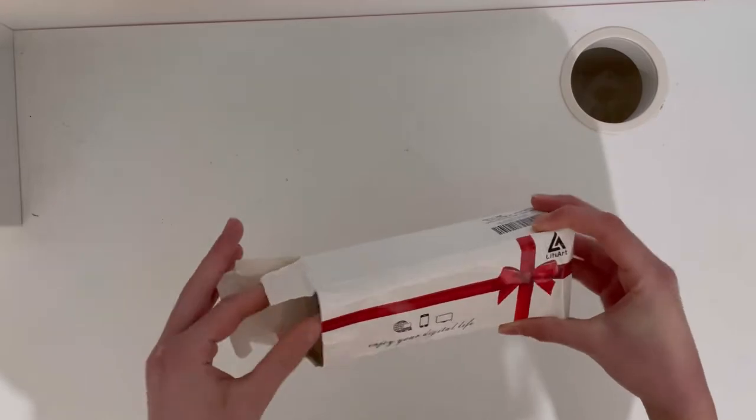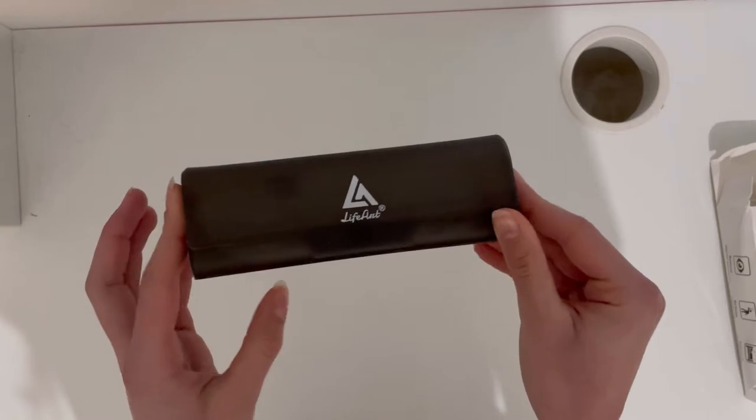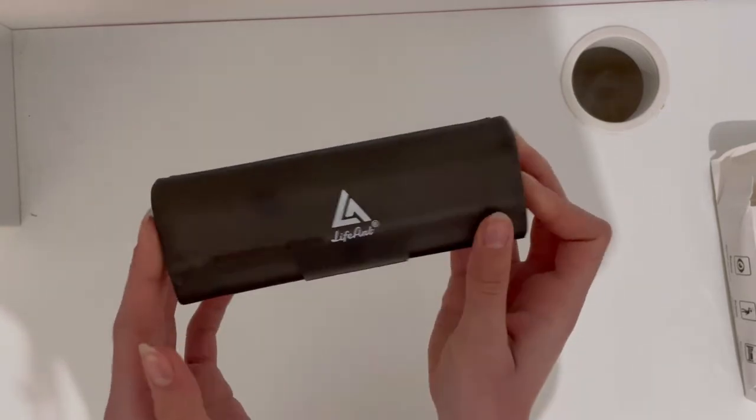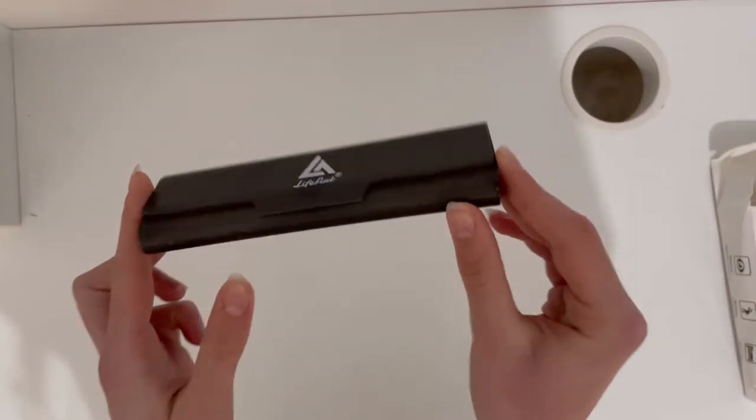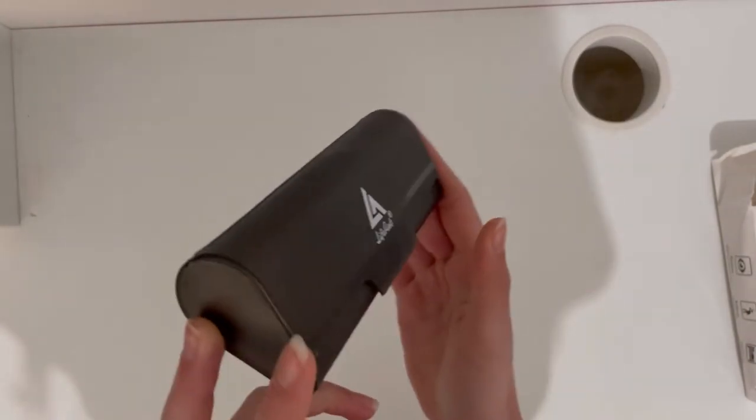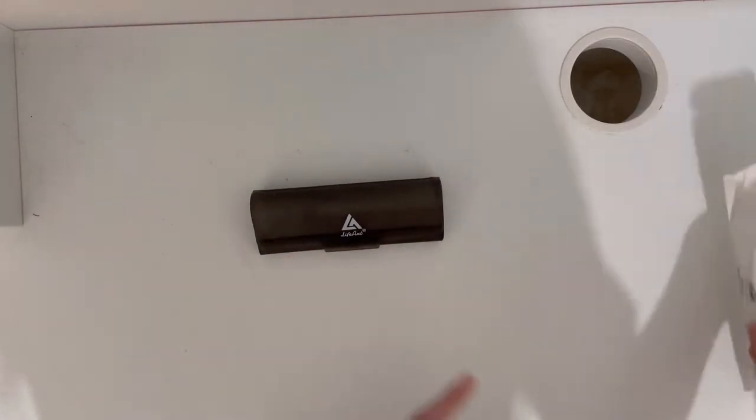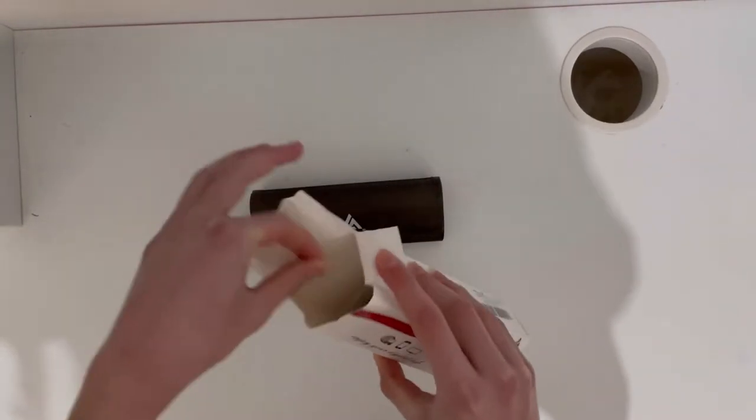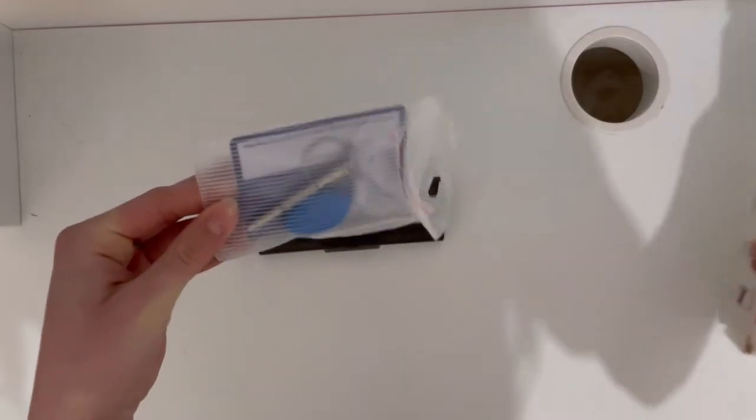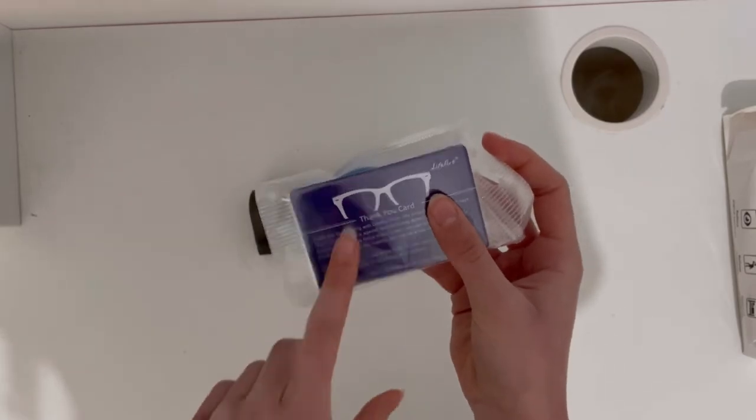Oh my God, they come in such a cute box. Look at that. It's this clear, kind of gray colored box that says Life Art. I don't think the glasses will be broken because they came in a box, so it should protect them during shipping. It feels like a hard case, not a soft case. In the box we also have this. What is this? Oh, it's a blue light testing kit so we can test it out and see if it's actually blue light.